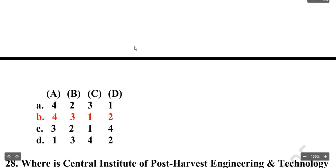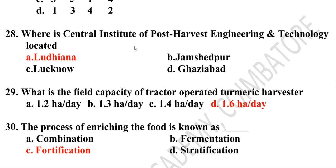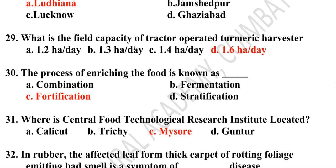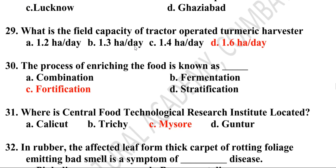Option B is the correct answer: four, three, one, two. Twenty-eighth question: Where is the Central Institute for Post Harvest Engineering and Technology located? Ludhiana. Twenty-ninth question: What is the field capacity of a tractor-operated turmeric harvester? Option D — 1.6 hectares per day. Thirtieth question: The process of enriching food is known as fortification. Thirty-first question: Where is the Central Food Technological Research Institute located? Mysore.